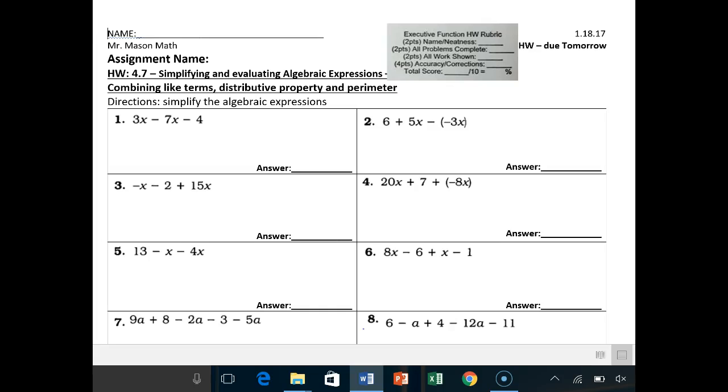Hey there, CJ Math students. This is your last homework assignment, homework 4.7 before your test tomorrow. So we're going to do a review of combining like terms, distributive property, and then also some of that geometry stuff with perimeter that we did today.